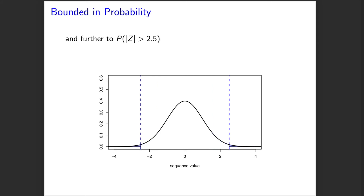Moving further out to c equals 2.5, we see this probability drops again. Moving to c of 3.5, there's only a minute amount of probability outside of 3.5, and as we imagine moving further and further out, that probability will get closer and closer to zero. One thing to note is that this probability is never equal to exactly zero — a normal random variable, no matter its mean and variance, always has some positive probability of being arbitrarily large. For any random variable, that probability converges to zero as the tail gets further and further out.